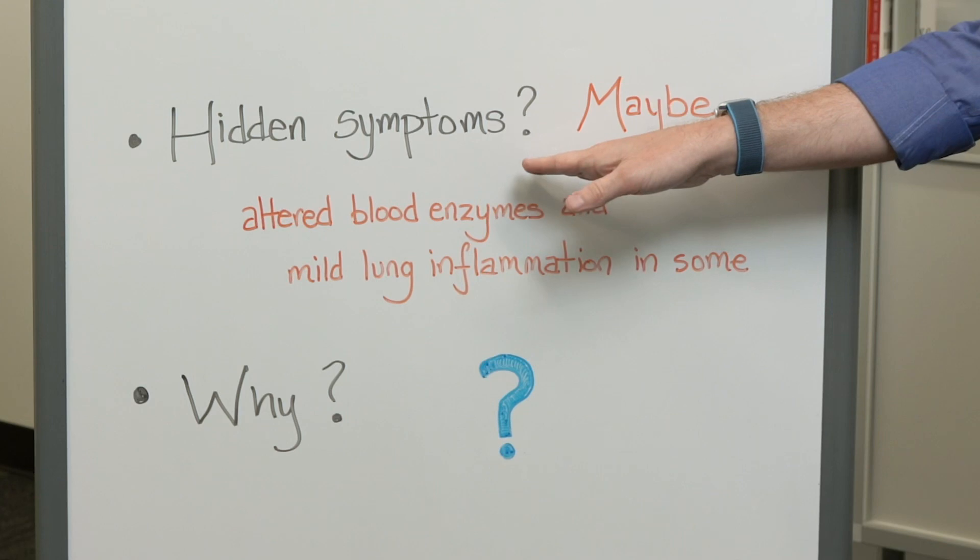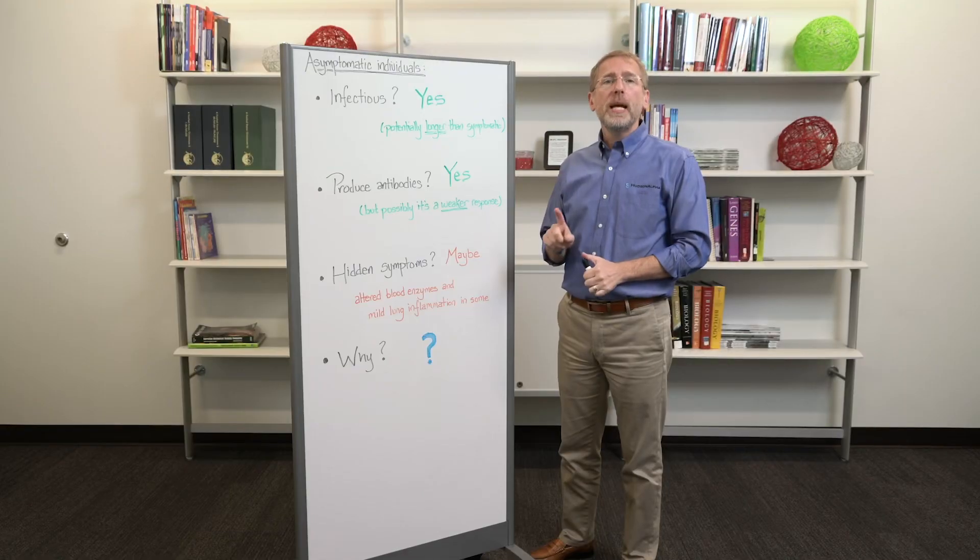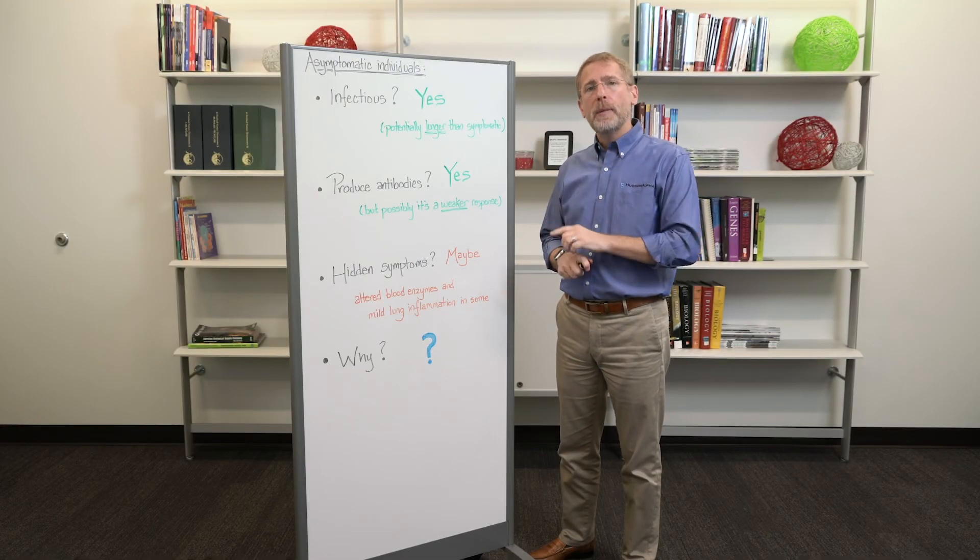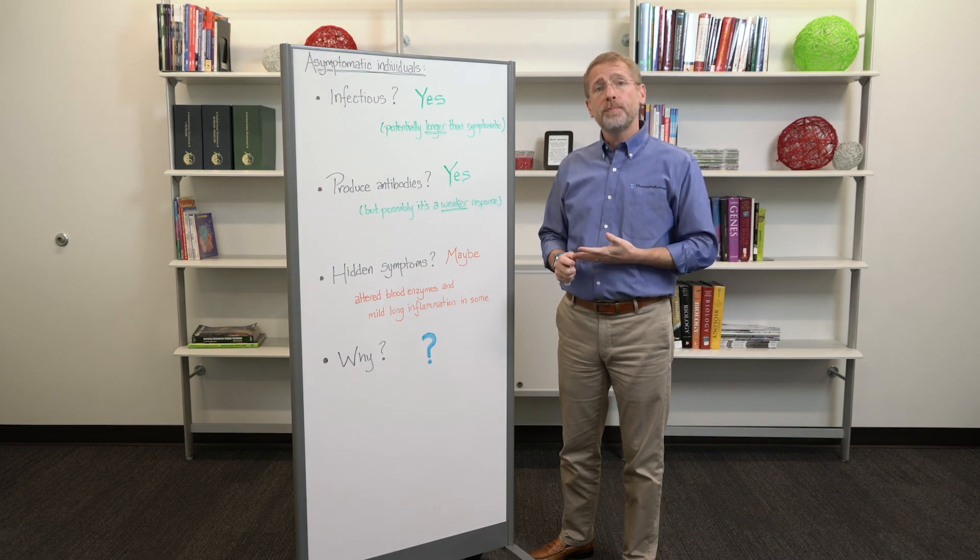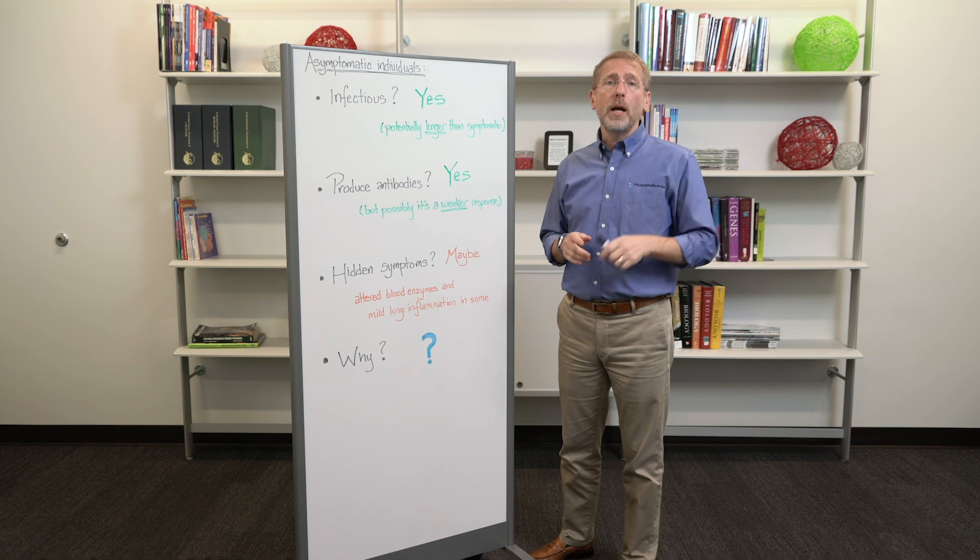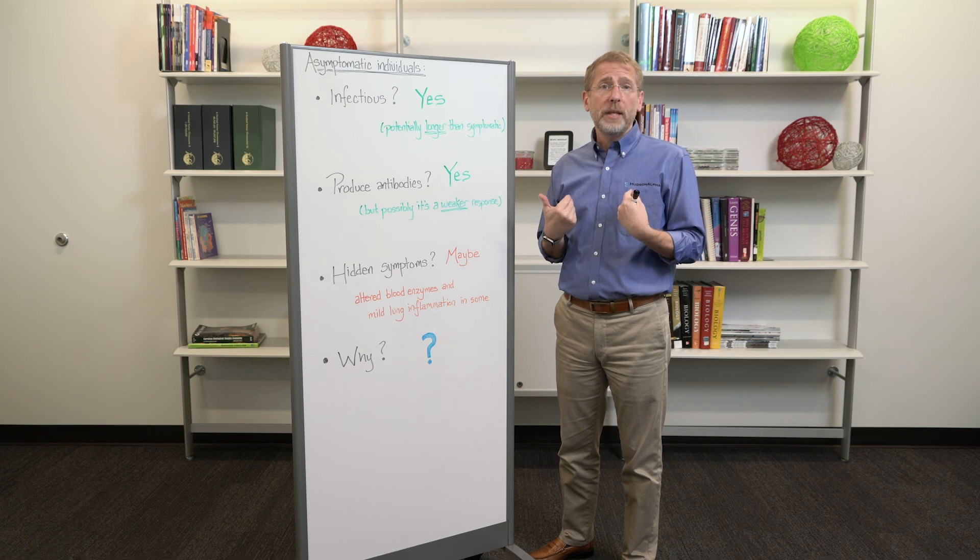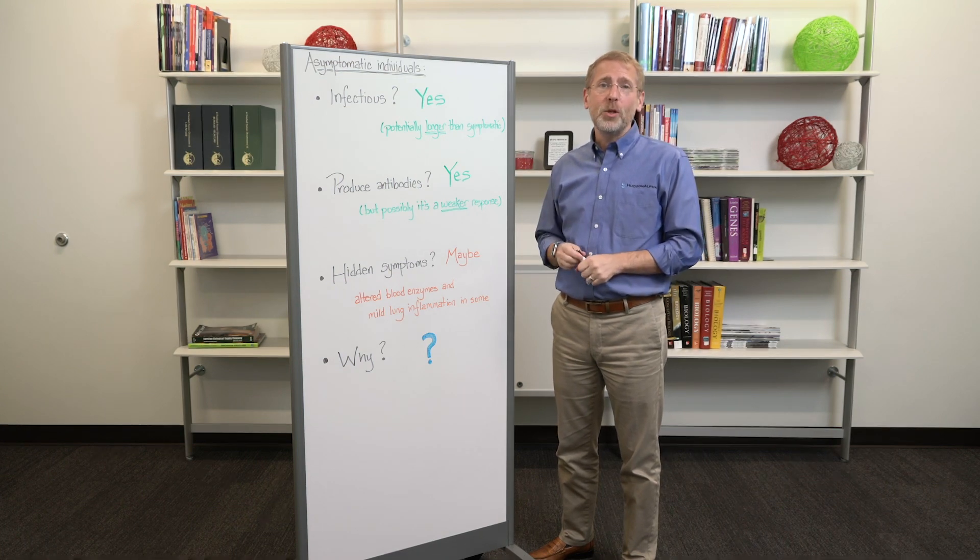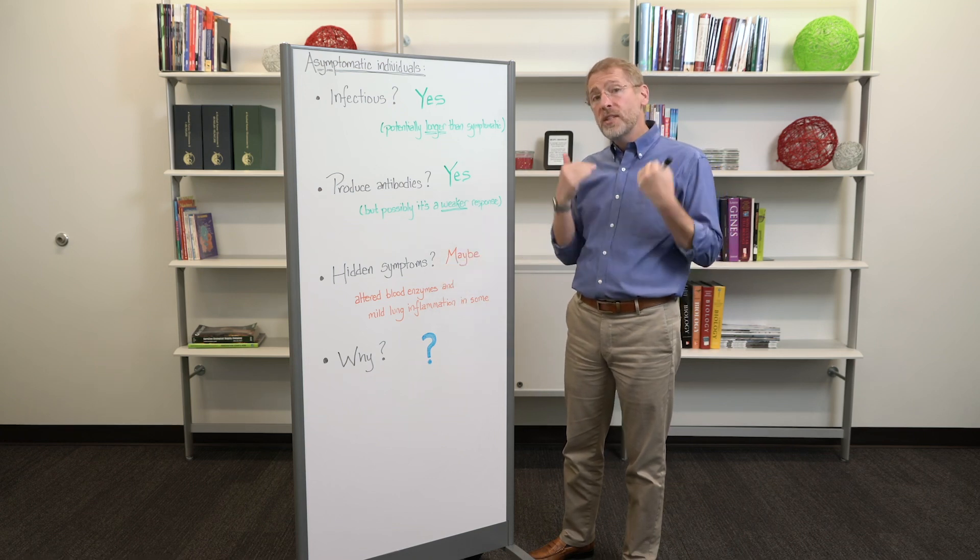Are there any hidden symptoms? Are asymptomatic people really asymptomatic? We're going to say maybe because if you take blood work from asymptomatic individuals or do a CT scan of their chest, in many cases you actually find altered levels of blood enzymes or even mild inflammation in the lungs. In some cases, it's the level of inflammation you would find from someone who has walking pneumonia.